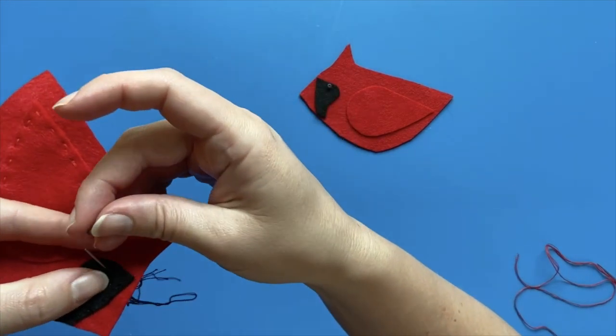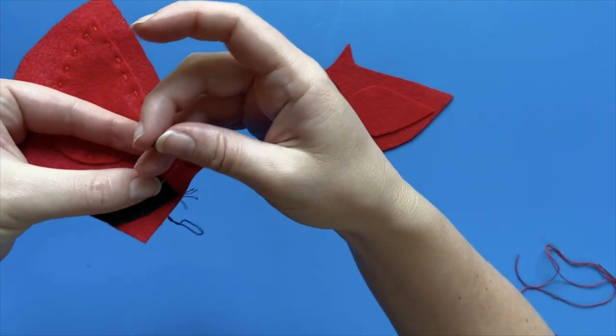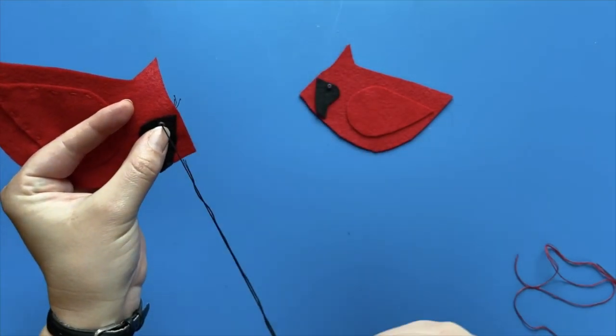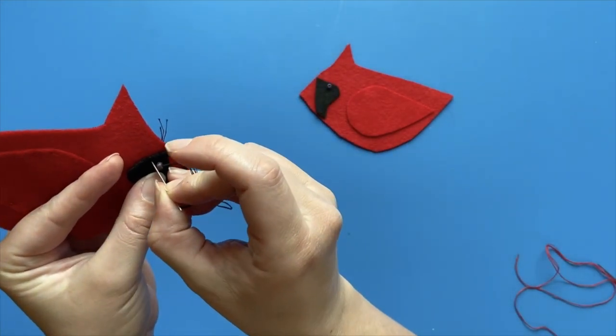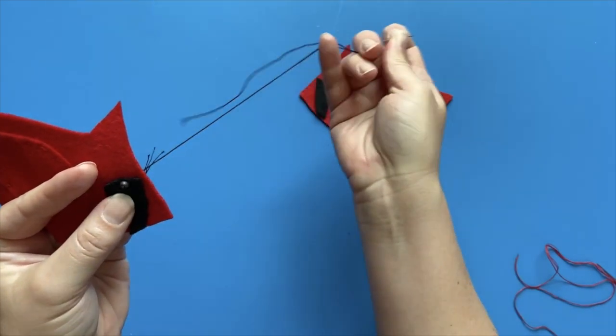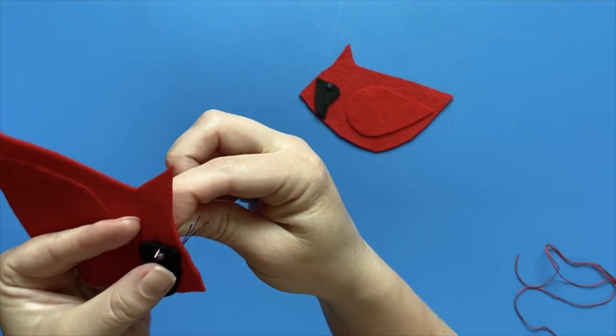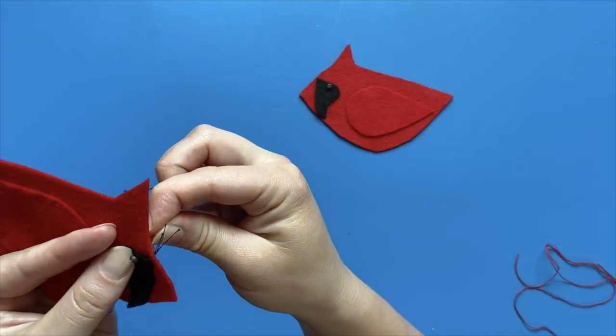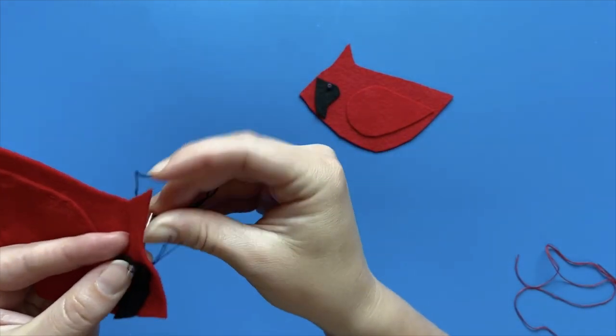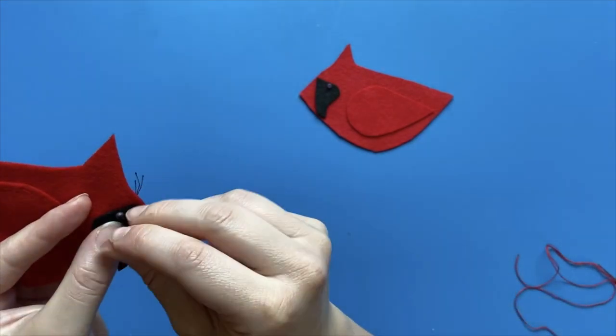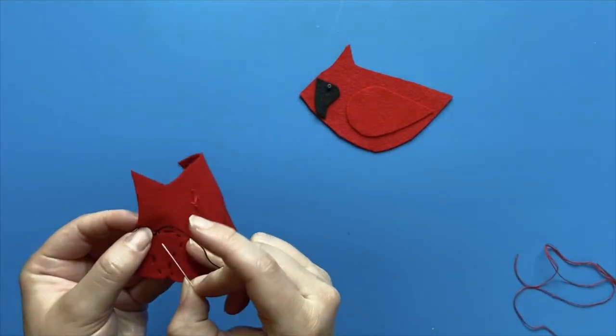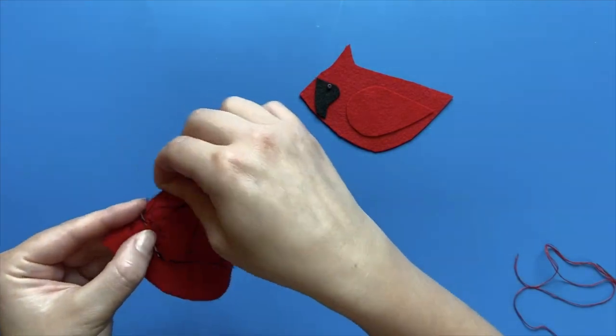If you have a bead, stitch it in place where the eyes should go. If not, pick a different color of thread and make a few straight stitches right next to each other where you think the eye ought to be. Make a knot on the back the same way we finished the red thread when we completed sewing the wing.